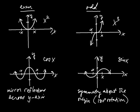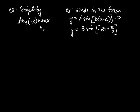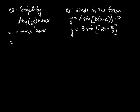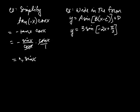Now let's apply these identities. To simplify tangent of negative x multiplied by cosine of x: tangent is odd, so tangent of negative x equals negative tangent of x. Tangent is sine over cosine, so we have negative times sine over cosine, times cosine over 1. The cosines cancel, and you just get negative sine. That's our simplified answer.